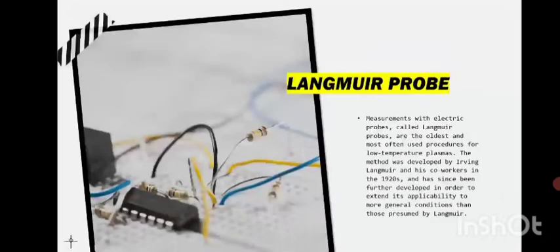What is a Langmuir probe? A Langmuir probe is a device used to determine the electron temperature, electron density, and electric potential of a plasma. It works by inserting one or more electrodes into a plasma with a constant or time-varying electric potential between the various electrodes or between them and the surrounding vessel.